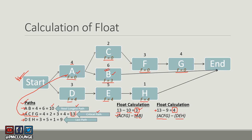To summarize: Step one — calculate the critical path. Step two — subtract the critical path value from the next longest path value to get the float for those activities; note that critical path activities retain float of zero, which is why we didn't change the value of A. Step three — repeat for remaining paths, which is how we calculated the float for activities D, E, and H.